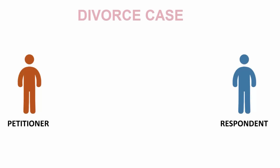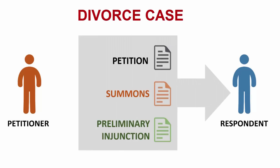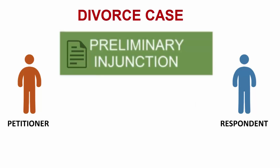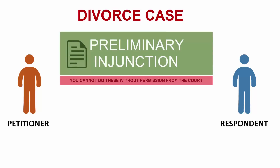When a person is served in a divorce case, that person gets a copy of the petition, the summons, and the preliminary injunction. The preliminary injunction is a court order that is issued in divorce cases that tells the parties what they cannot do while their case is pending without first getting the court's permission.